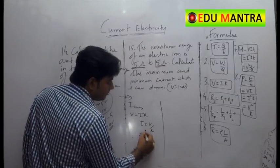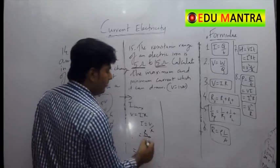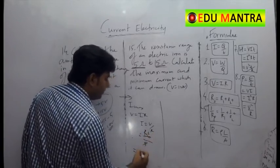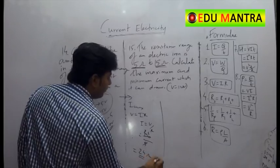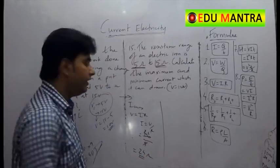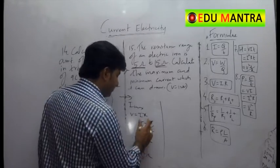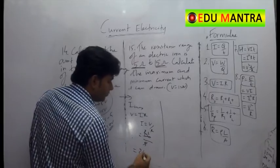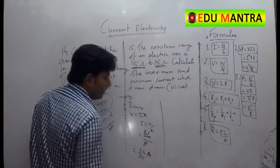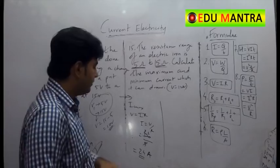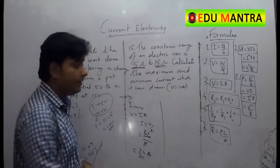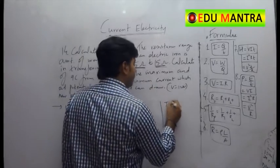2's are 10. Okay. And 5, 4's are 20. So it is 24 ampere. Okay. So this is the maximum current. And what is the minimum current which it can draw?